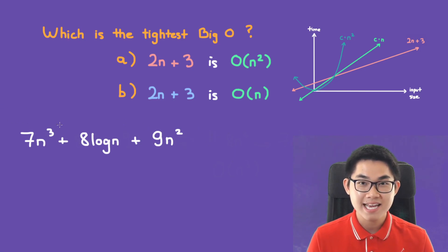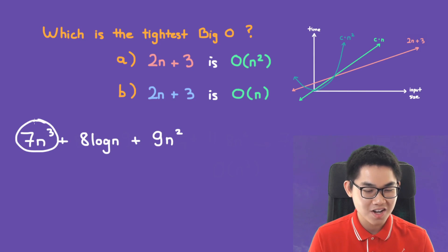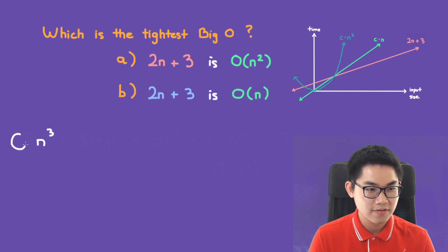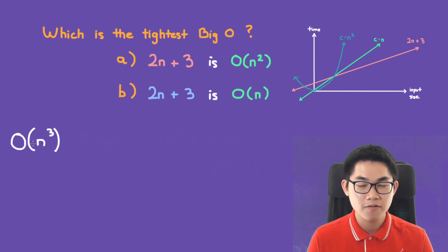And now the second step is to choose the largest term. So out of these three terms, which one is the largest? You have n³, you have log(n), and n². Well, of course, this one will be the largest. So you get rid of these ones. And the last step is simply get rid of the coefficient. And now you know that this function is going to be O(n³).